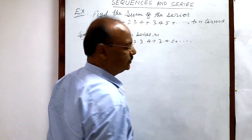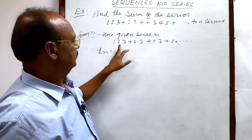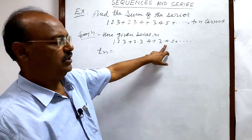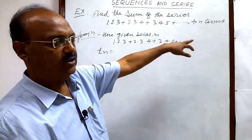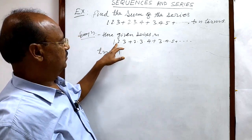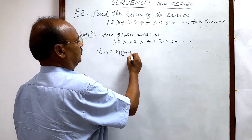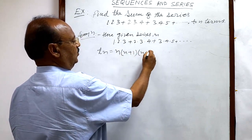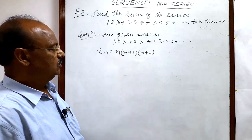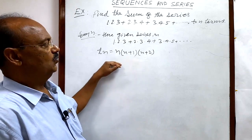First of all we should see the pattern of the terms of the series so that we can write the nth term. The first term starts from 1, the second term starts from 2, the third term starts from 3, so naturally the nth term will start from n. We need to recognize the nth term of the given series.